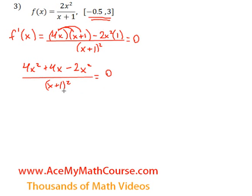And that's all over x plus 1 squared equaling 0. Now, I can cross multiply to get rid of the denominator. So, x plus 1 squared times 0 is just 0. So, that just goes away. Okay, so, 4x squared minus 2x squared is 2x squared plus 4x equals 0.